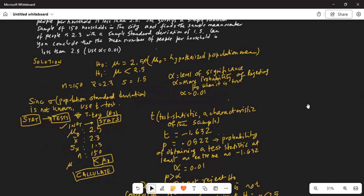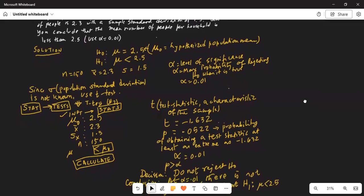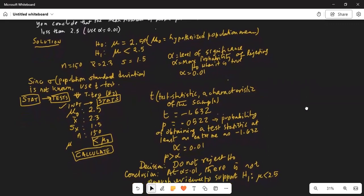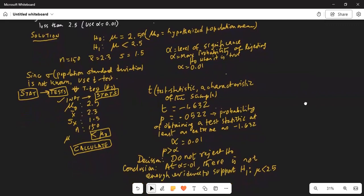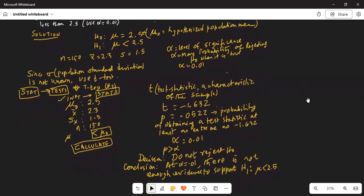We calculate a test statistic which in this case is a t number and the t is minus 1.632. The test statistic is a characteristic of the sample. The p-value is 0.0522. What is this p-value? It is the probability of obtaining a test statistic at least as extreme as minus 1.632. Compare this p-value with alpha. Level of significance given to us is 0.01. So, p is greater than alpha. Therefore, decision do not reject h0. Conclusion at alpha equal to 0.01, there is not enough evidence to support h1 mu less than 2.5.